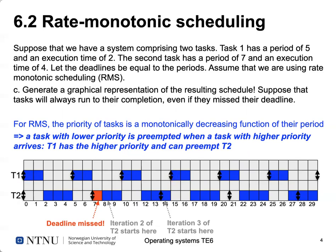We start with T1, which has a deadline every five time units, indicated by a combined up/down arrow symbol for deadline and new job release. T1 executes two time units in the first interval, then finishes, and we switch to T2. T2 takes four time units but we can only execute three before time five, when T1 becomes ready again. T2 is preempted; T1 executes two more cycles. We've now reached time seven but T2 has only completed three of four time units.